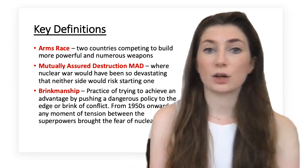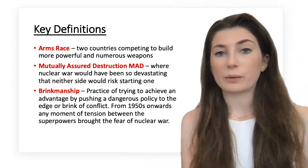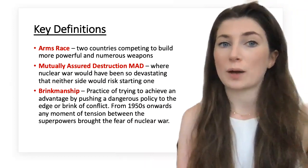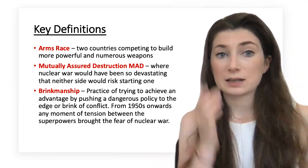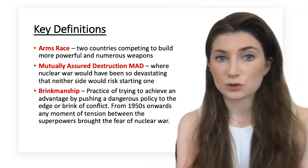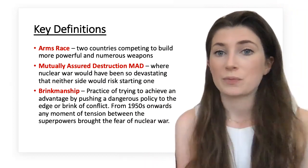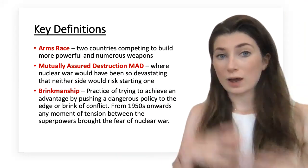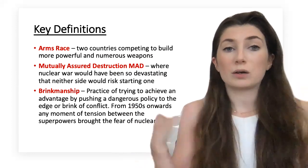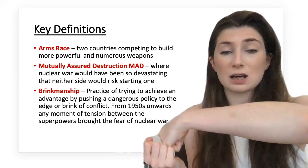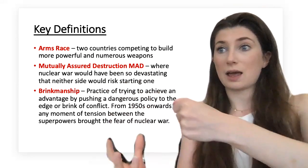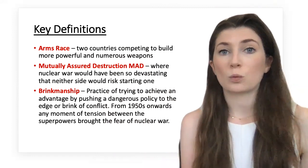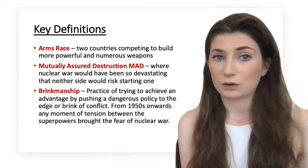Let's cover some key definitions. First, 'arms race': two countries competing to build more powerful and numerous weapons. The next key term is 'mutually assured destruction,' or MAD. This is where nuclear war would have been so devastating that neither side would risk starting one. When both sides have nuclear capability and one strikes, the other is able to strike back before being destroyed — both sides will get destroyed. That's mutually assured destruction.